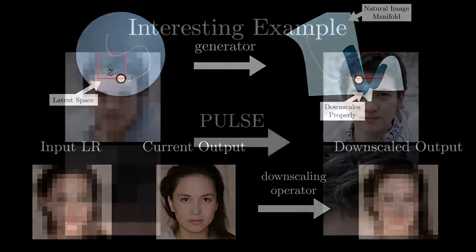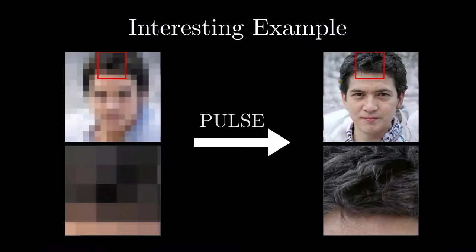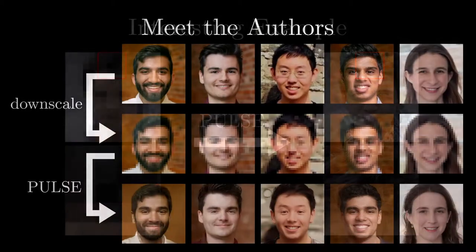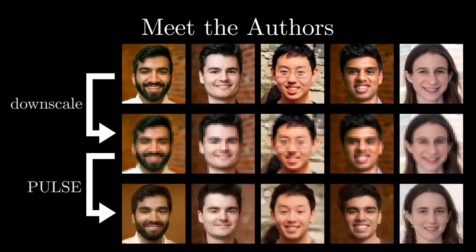In this LR image, you can see a dark spot, which Pulse turns into a tuft of hair. And that is how Pulse works. It's simple, easy, and produces beautiful, realistic images that all downsample perfectly to a given LR image.